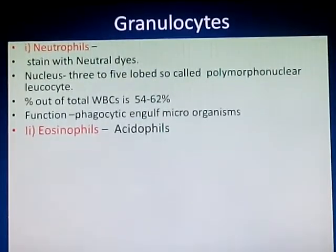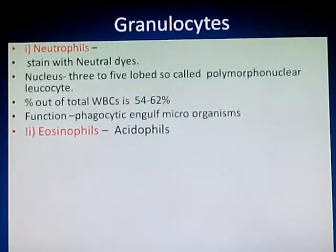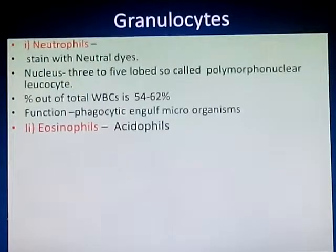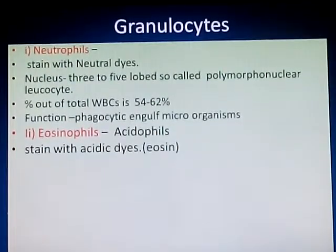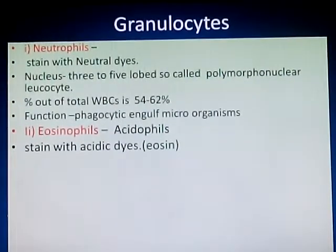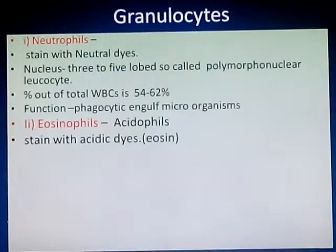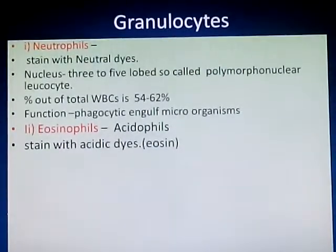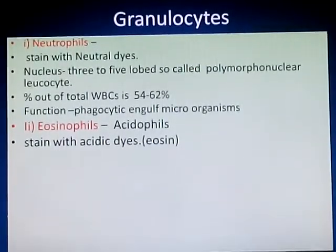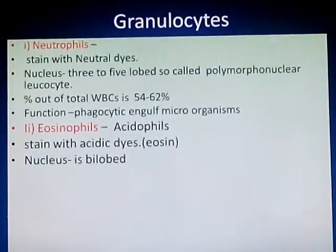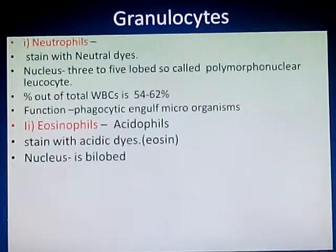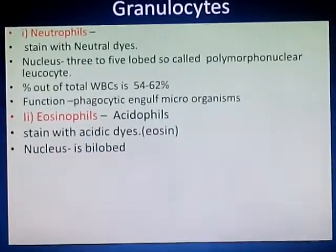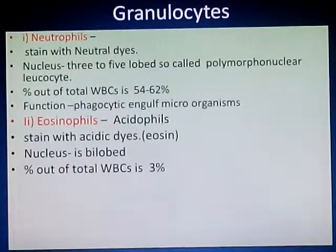The second type of granulocyte is eosinophiles, also called acidophiles, because they can be stained with acidic dye. The name eosinophile comes from the acidic stain called eosin. Regarding staining, eosinophiles are stained with acidic dyes such as eosin. The nucleus of eosinophile is bilobed, meaning there are two lobes in the nucleus.